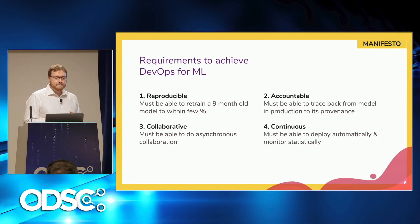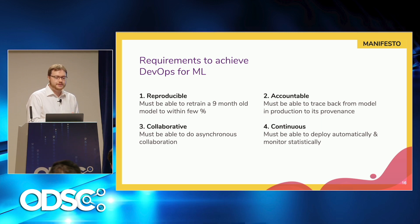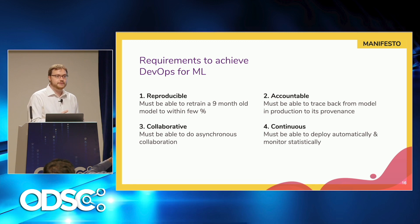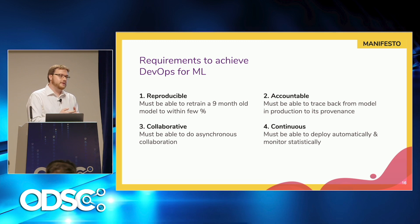So there are four key requirements in the MLOps manifesto — what I'm calling DevOps for ML. We've identified these four requirements where, if you can't achieve them, you're going to have a bad time. I'm interested in people's feedback — please tell me if you think we missed one after the talk. By the way, these requirements are generally already solved for software engineering and DevOps.